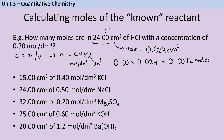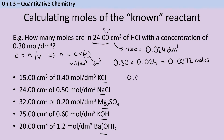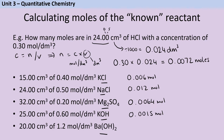Pause the video now and use this same method to calculate the amount of moles in each of these solutions. Although the questions tell you the identity of each substance, this is actually irrelevant to your answer. Hopefully you were able to convert each volume into decimetres cubed and work out that the first solution has 0.006 moles, the second 0.012 moles, the third 0.0064 moles, the fourth 0.0015 moles, and the final solution 0.0024 moles.